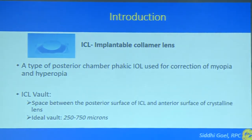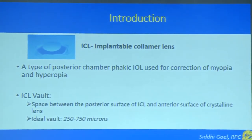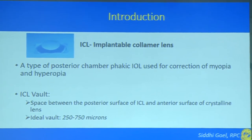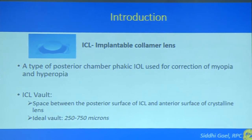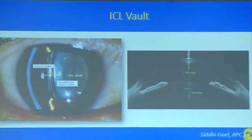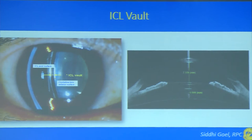I'd also like you to understand what is the ICL vault. It is the space between the posterior surface of the ICL and the anterior surface of the crystalline lens, and we target an ideal vault of 250 to 750 microns. This slit lamp image shows us the ICL vault — the space between the yellow arrows, marked by the asterisk, is the ICL vault. This is the corresponding anterior segment OCT which we routinely do in our post-op patients to assess the ICL vaulting.